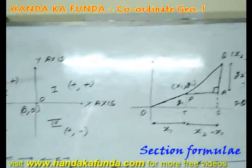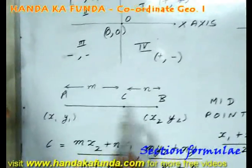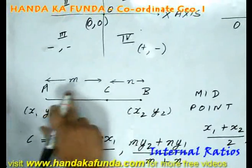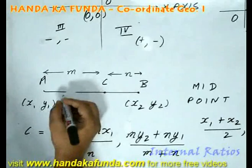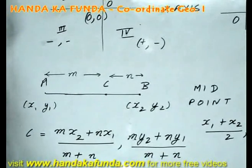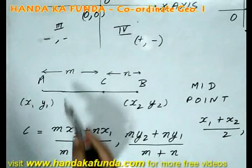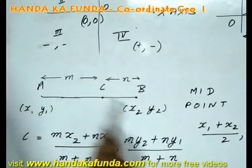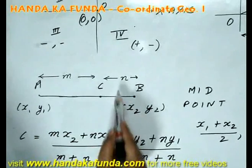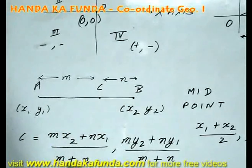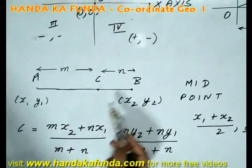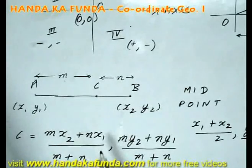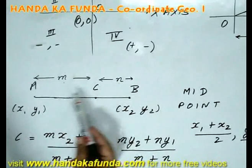If I am given two points A and B, (x1, y1) and (x2, y2), and a point C divides the line AB internally in the ratio of m is to n, then can I find out the coordinates of point C? Yes, I can. That will be given by mx2 plus nx1. Please remember it should always be crossed. Once again, mx2 plus nx1 divided by m plus n. The y-coordinate very similarly will be my2 plus ny1 divided by m plus n.